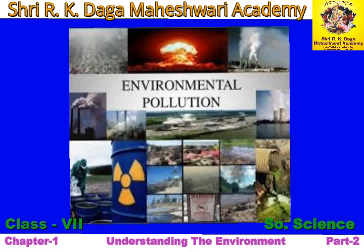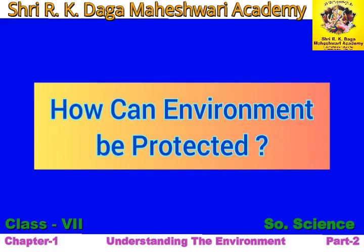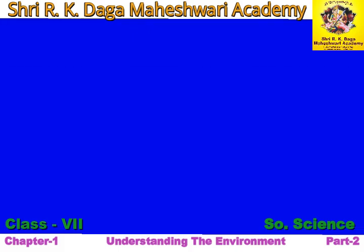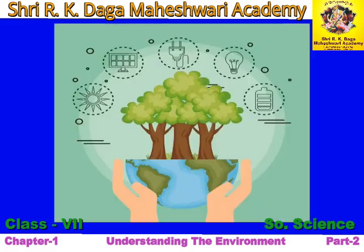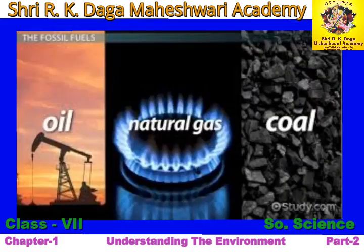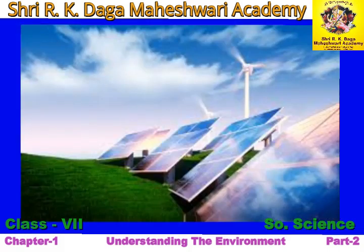There are two types of pollution: natural pollution and man-made pollution. We can protect our environment in two ways. First, by using natural resources very carefully. Secondly, by preserving natural resources as much as possible. There are many resources like fossil fuels such as natural gas and petroleum which are not renewable easily. It takes millions of years for nature to generate these resources for us. Hence, we must not waste these resources, otherwise nothing will be left for the coming generations.